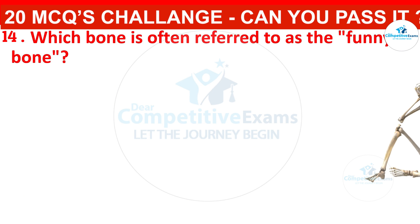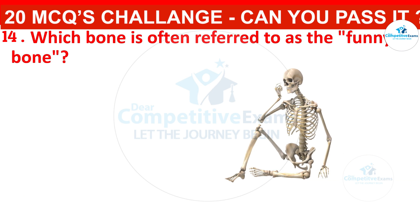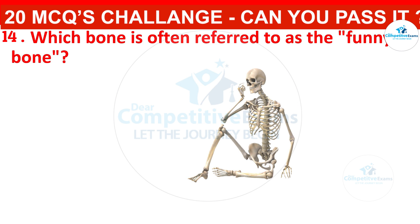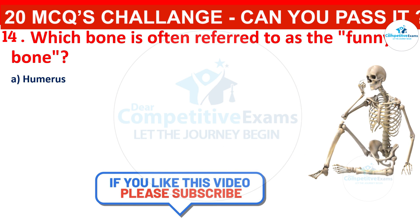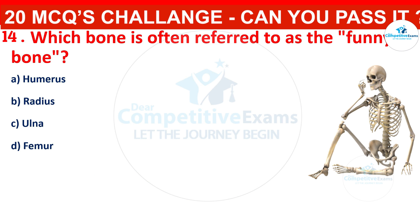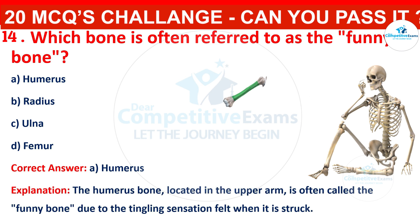Which bone is often referred to as the funny bone? Your options are: humerus, radius, ulna, or femur. The correct answer is humerus. The humerus bone, located in the upper arm, is often called the funny bone due to the tingling sensation felt when it is struck.